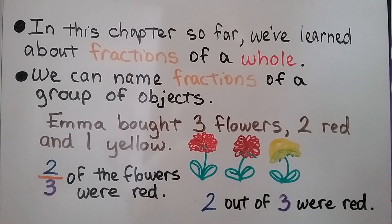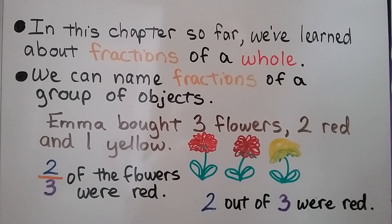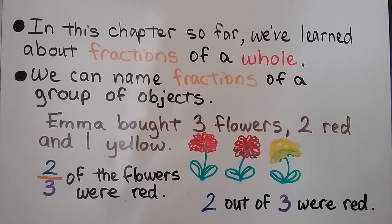Emma bought three flowers — two red and one yellow. Two thirds of the flowers were red. Two out of three were red. That's a fraction of the group of three flowers.